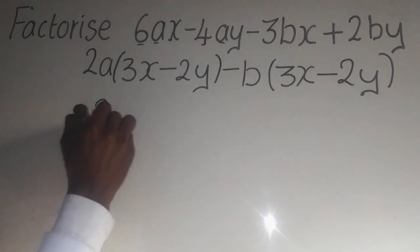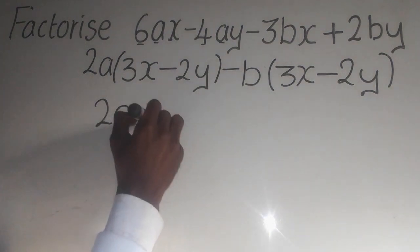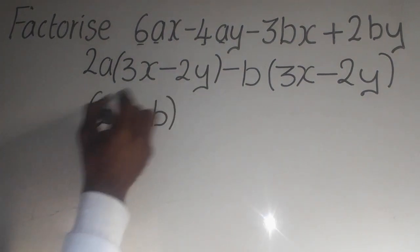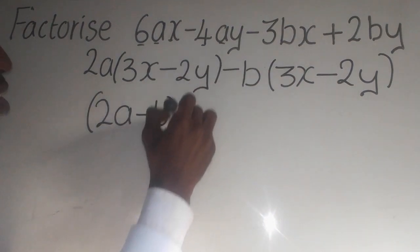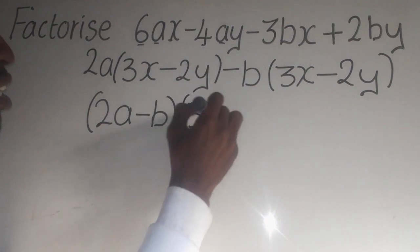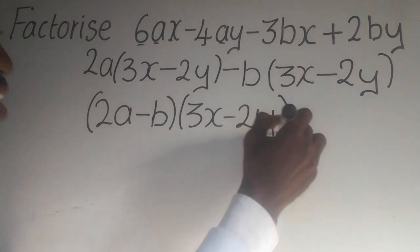So it will be 2A, again, minus B, like this. Now, we choose any of the factors. So we can go for this one, since they are the same. So 3X, minus 2Y, then you're done.